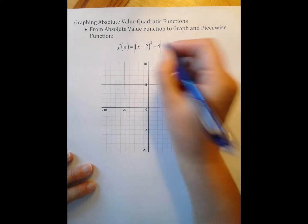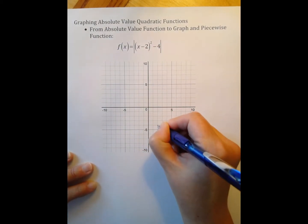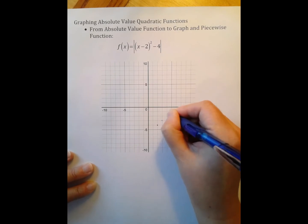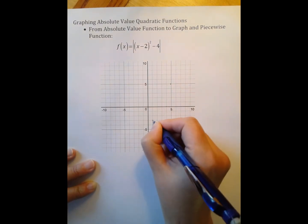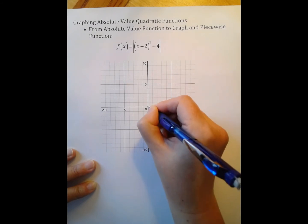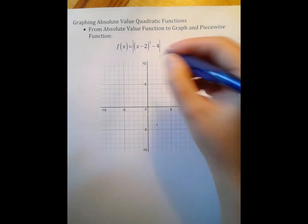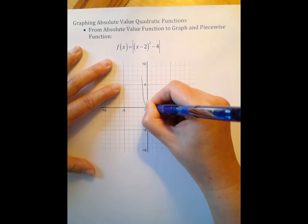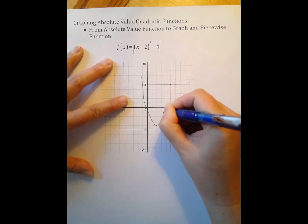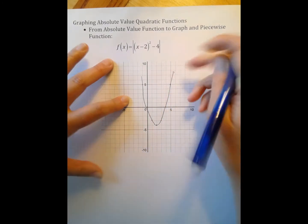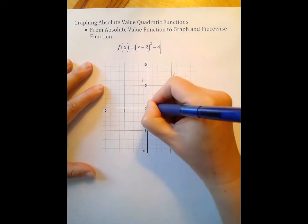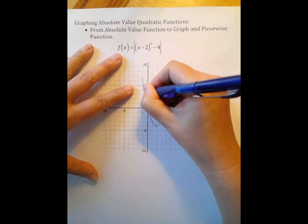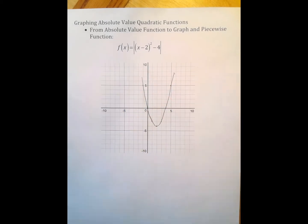My vertex is at 2 negative 4. And I have my a as 1, so over 1 up 1, over 1 up 3, over 1 up 5. Mirror image it. And connect it. My parabola is a little wonky on this side. Let's see if I can fix that just a little bit. There we go. That looks a little bit better.